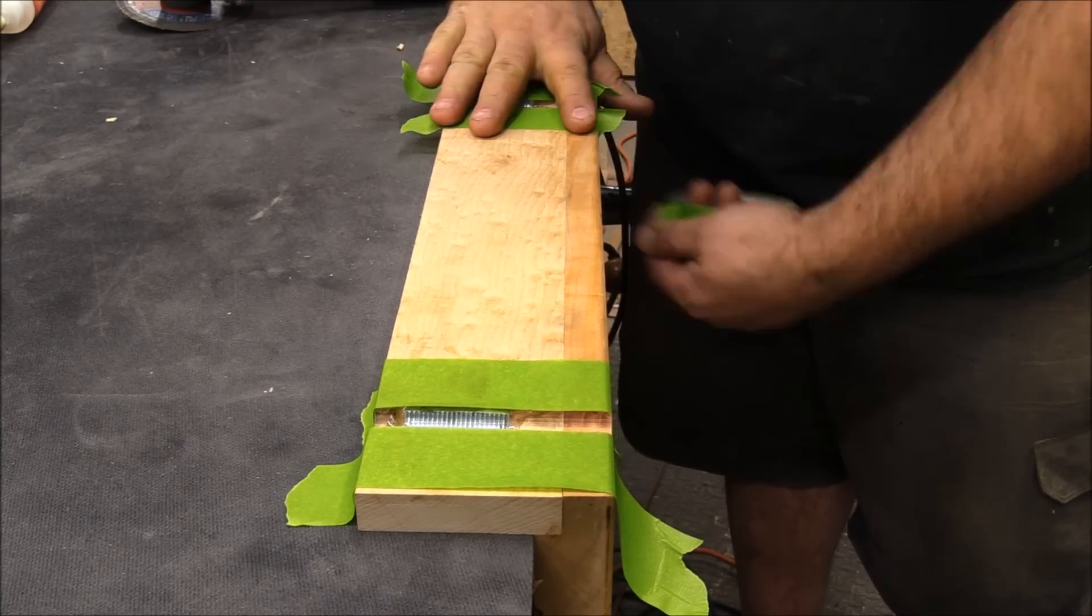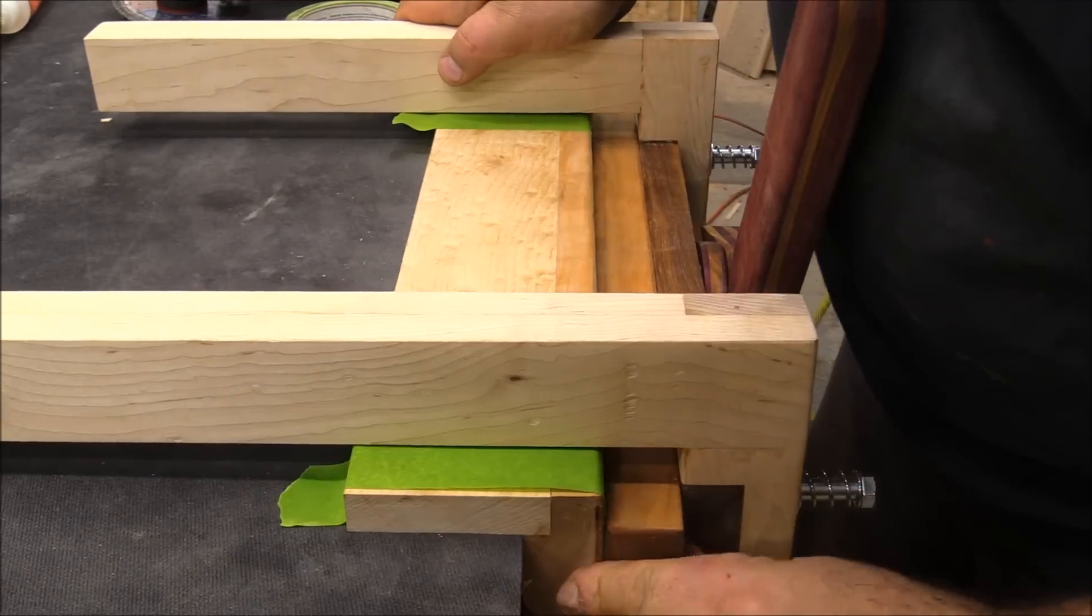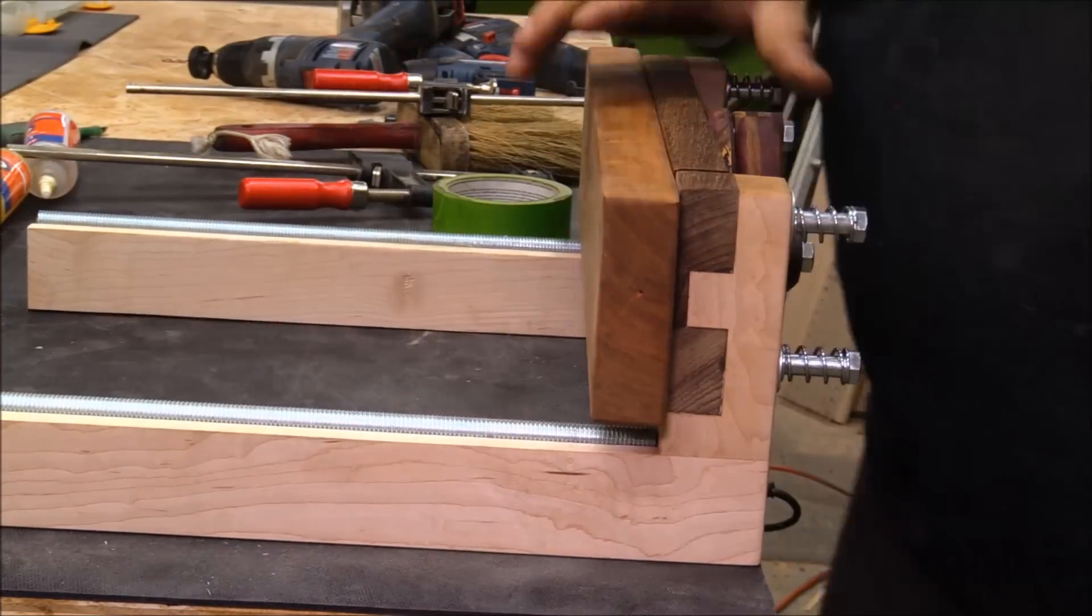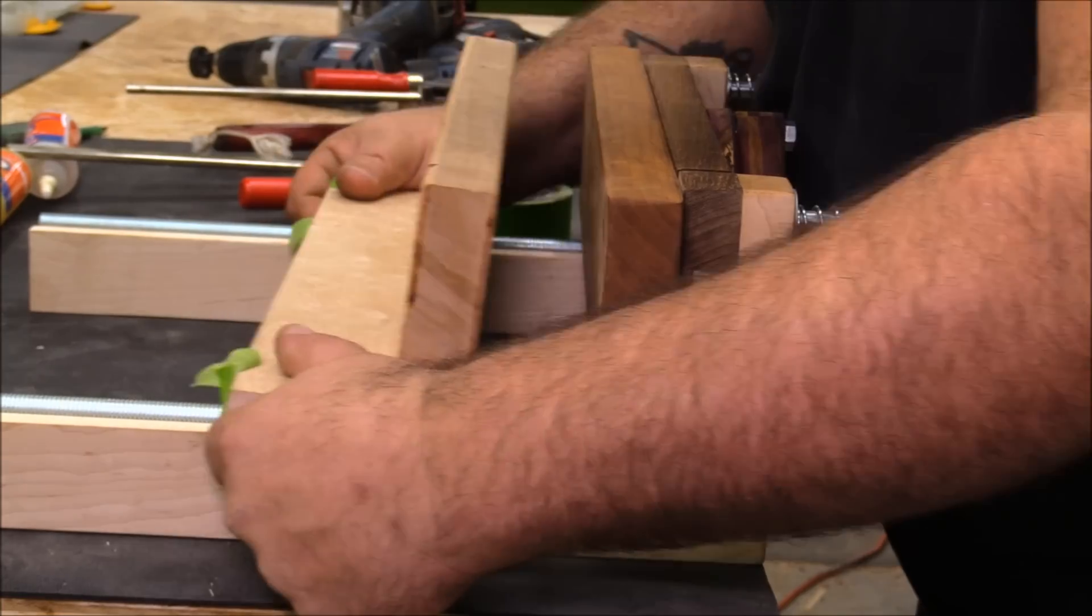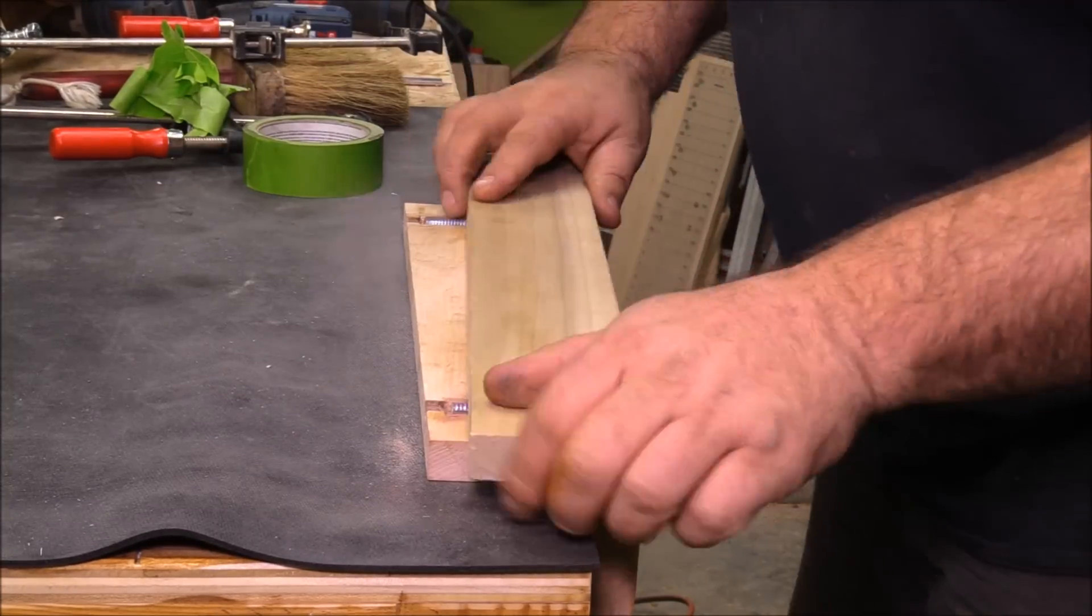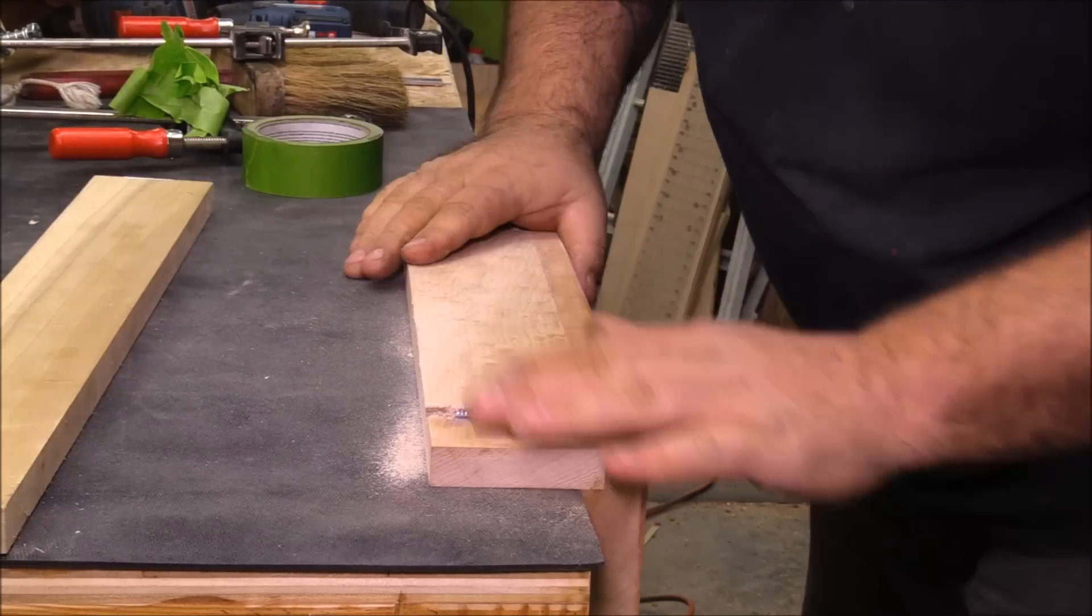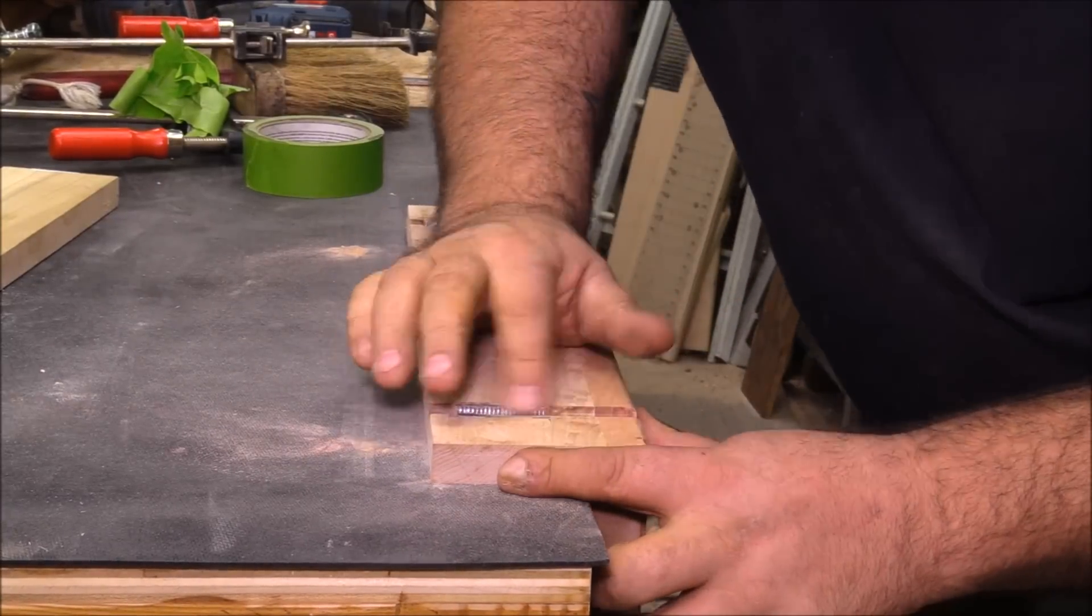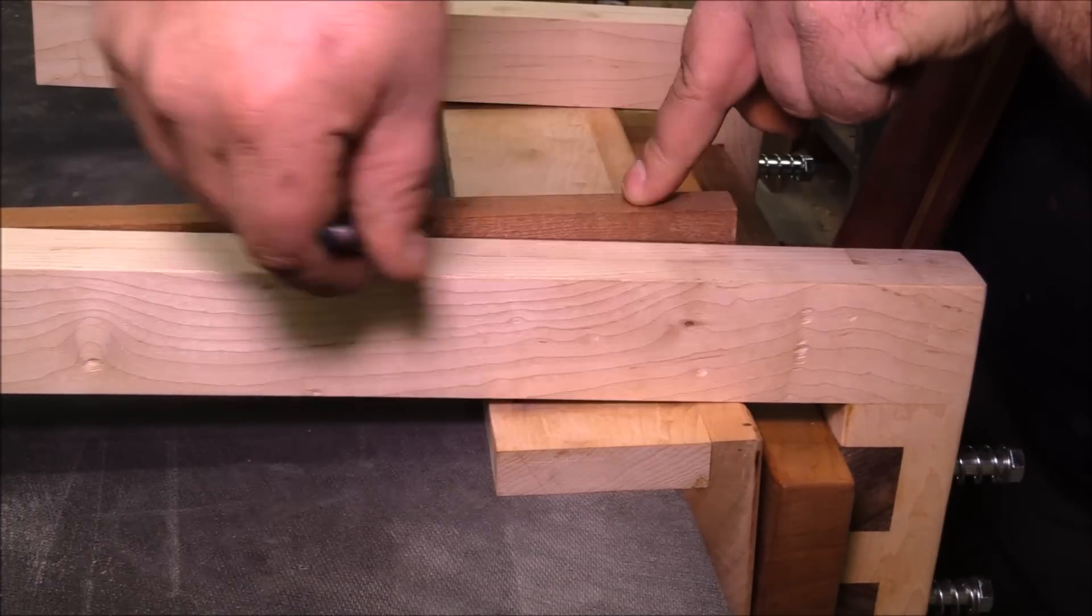After I got the holes all chiseled out I filled those holes with epoxy and then put the couplers in. I set the clamp right where it's going to go and that lines up everything, lines up those couplers in those holes. After the epoxy dried I came back with a sanding block and just cleaned it up and made sure there weren't any real high spots that were going to interfere with the smoothness of the action.